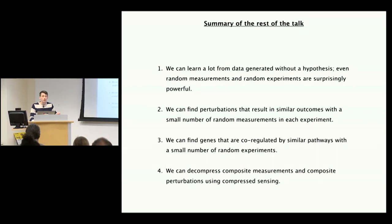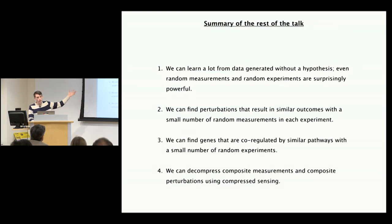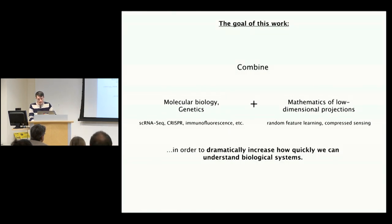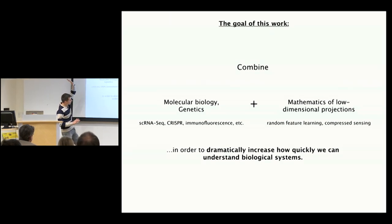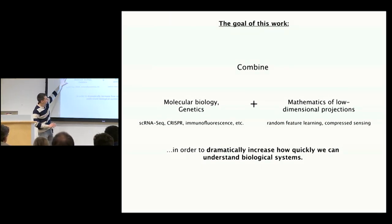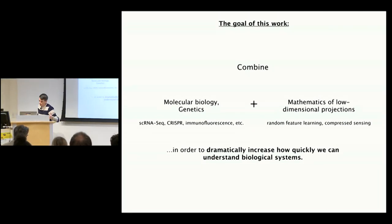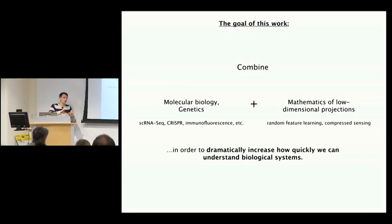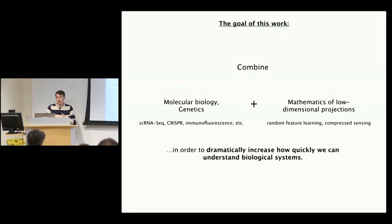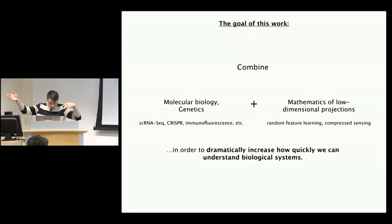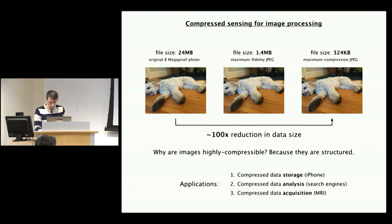The summary is that you can learn a heck of a lot about biological systems by collecting even random composite data — for example, how genes are co-regulated or which genes are co-functional. We're combining work from molecular biology, genetics, and mathematics, specifically compressed sensing and a fundamental theorem called the Johnson-Lindenstrauss Lemma, which has all sorts of applications.